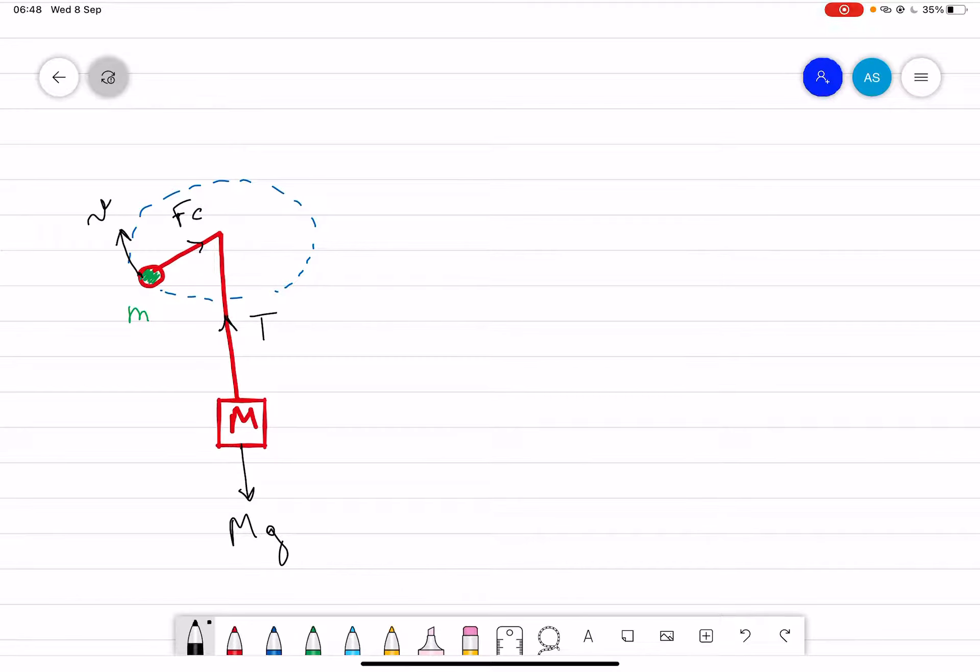We know the formula where F centripetal is equal to mv squared over r. r is the radius of the circle.